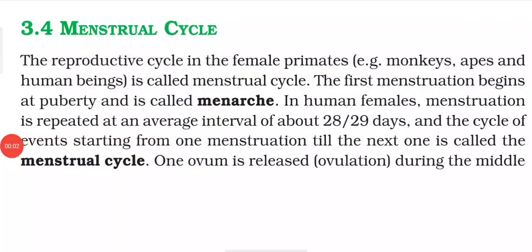Hello everyone. In this video we will learn about the Menstrual Cycle. The reproductive cycle in the female primate — for example, monkey, apes, and human beings — is called the Menstrual Cycle. That means whatever cycle occurs during the reproductive phase, we call it the Menstrual Cycle.